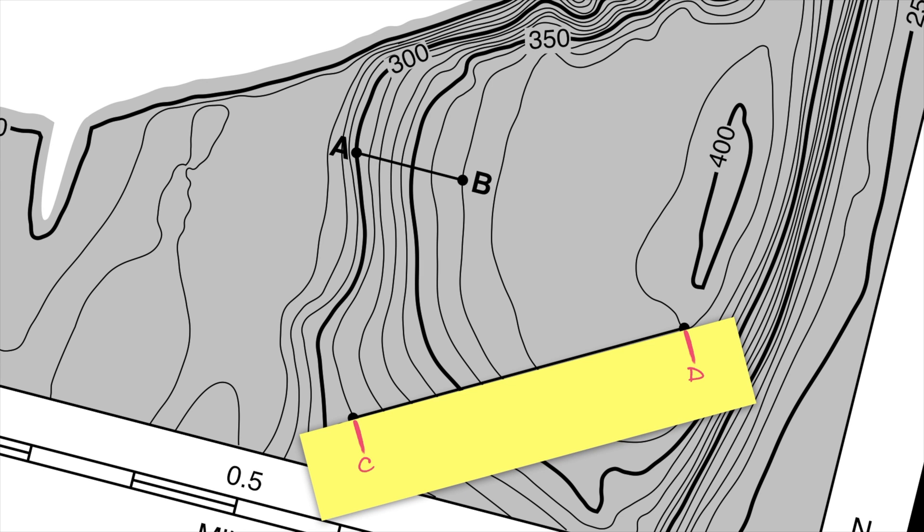Keeping in mind my contour interval is 10 feet, for D I can see that I'm one line outside of the 400 contour line, which means I'm 10 feet lower than 400, or 390 feet.